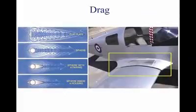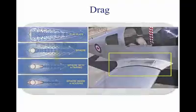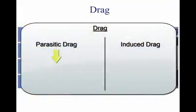Drag is the force that resists movement of an aircraft through the air. There are two basic types: parasitic drag and induced drag. The first is called parasite because it in no way functions to aid flight, while the second, induced drag, is a result of an airfoil developing lift.